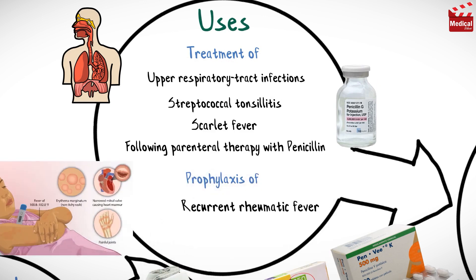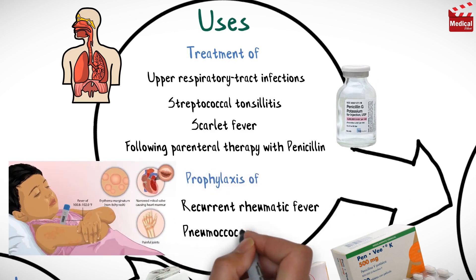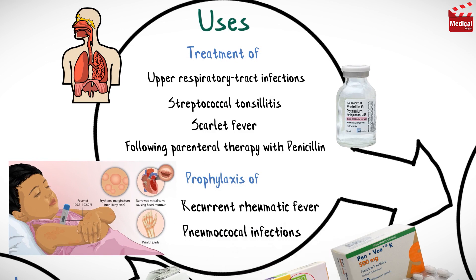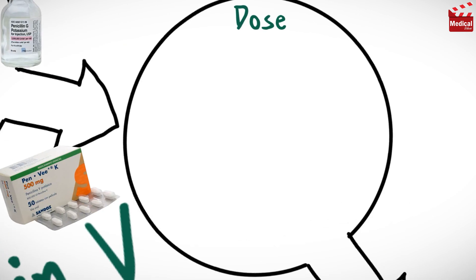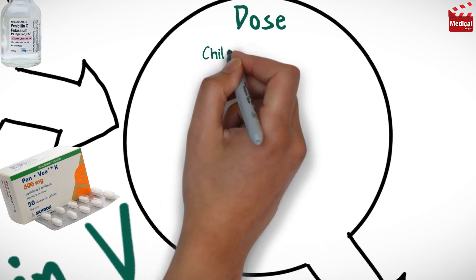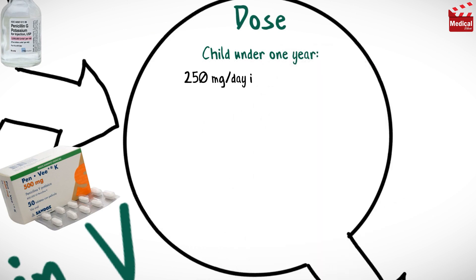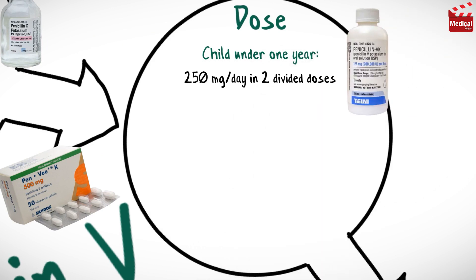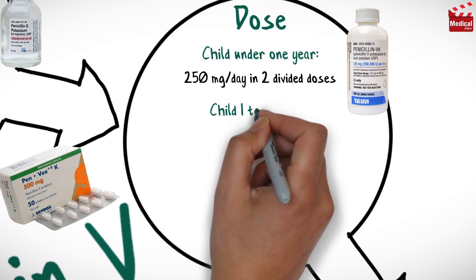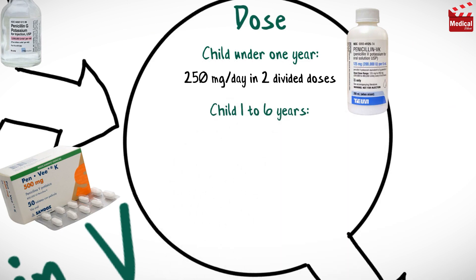It is also used in the prophylaxis of recurrent rheumatic fever and prophylaxis of pneumococcal infections. The usual dosage of penicillin V for children under one year is 250 milligrams per day in two divided doses, and for children from 1 to 6 years, 500 milligrams per day in two divided doses.